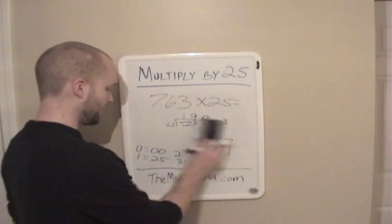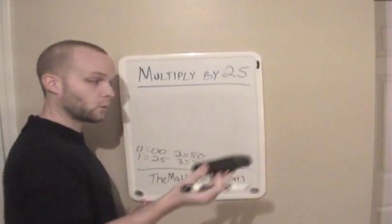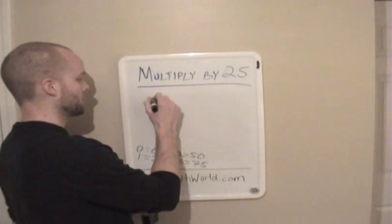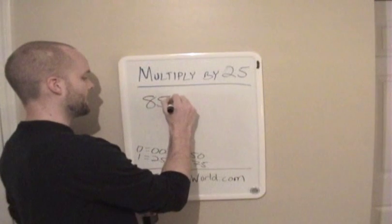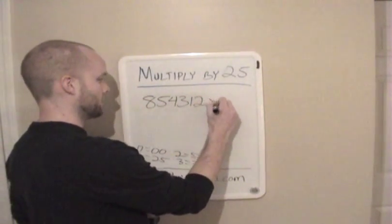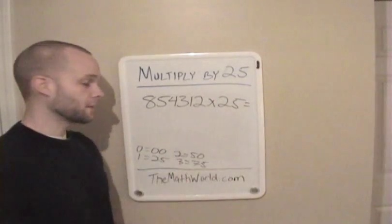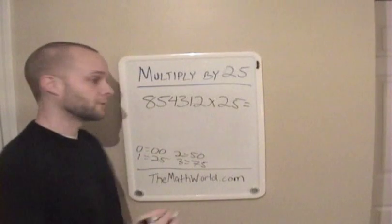So we'll do one more just to make sure you guys understand. And we'll do a large number. It works the same, but we'll just do a large number just to do it. 854312. I just made that number up. Times 25. Again, the first thing we're going to do is divide this number by 4.